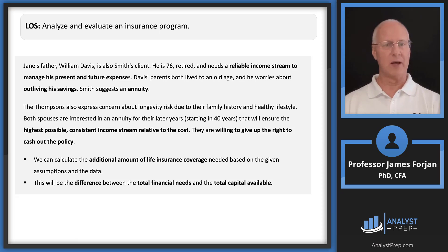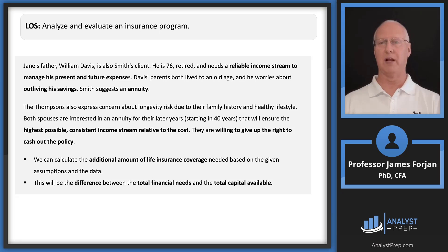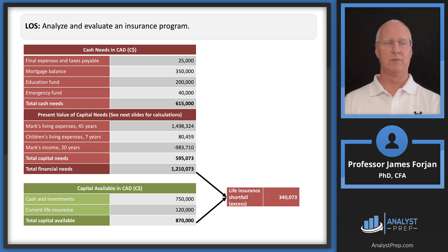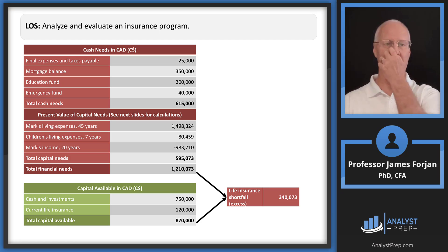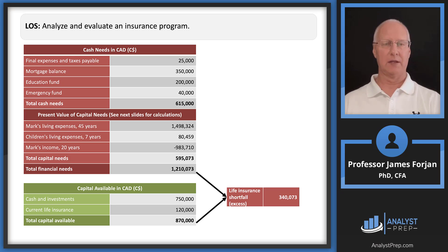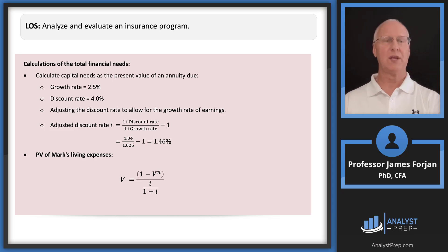We can calculate the additional life insurance needed from the difference between total financial needs and total capital available. Cash needs total $615,000. We also need present values for Mark's living expenses, the daughters' living expenses, and Mark's income. The assumptions are 2.5% growth and a 4% discount rate. The adjusted discount rate is (1 + discount rate) / (1 + growth rate) − 1.